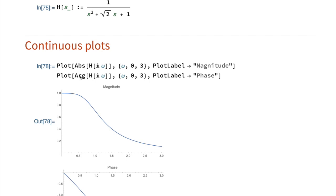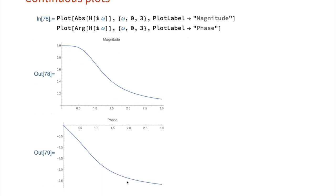If I take the complex argument instead of the absolute value, then I get the phase, and this phase is measured in radians.